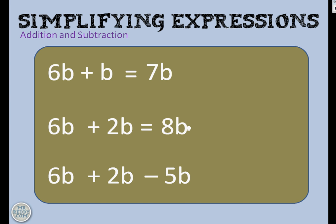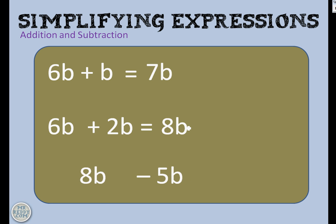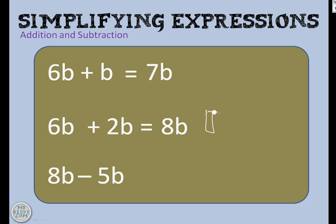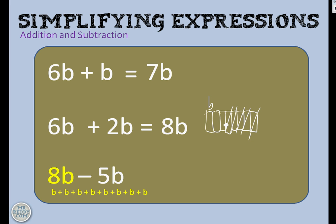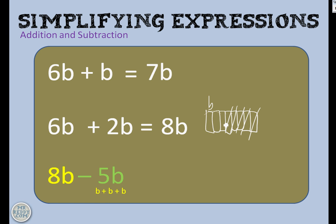A new one: 6b plus 2b take away 5b. We know that 6b plus 2b equals 8b — we've just done that. So now we've got 8b take away 5b. A bar model would look like this — so that's b, and we've got 8 of them. But then we take away 5 of them. So 8b stands for all of those b's and 5b stands for all of those b's. We can cancel them out like that. What are you left with? 3b. So to summarize: 8b take away 5b is 3b.